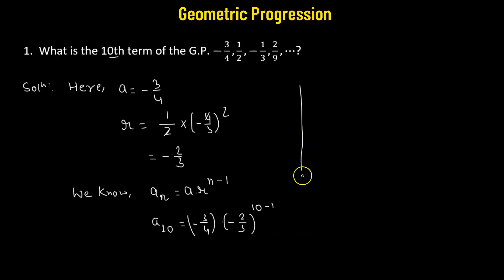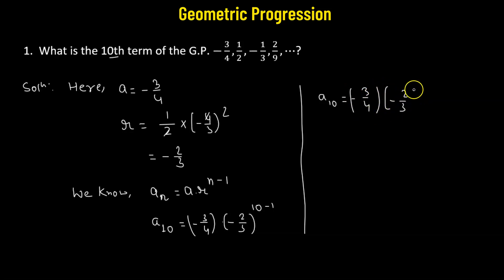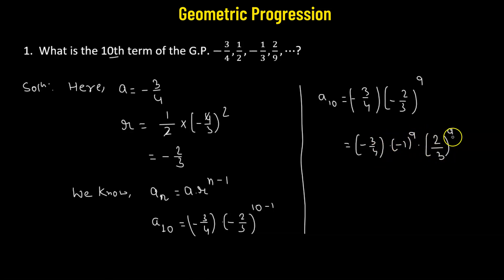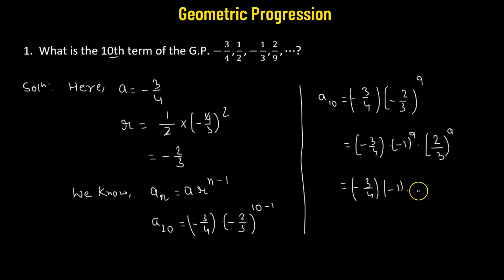So a_10 equals negative 3 over 4 multiplied by negative 2 over 3 raised to the power of 9, which equals negative 3 over 4 multiplied by negative 1 raised to the power of 9 times 2 over 3 raised to the power of 9. Since 9 is an odd number, we get 3 over 4 times 2 raised to the power of 9 divided by 3 raised to the power of 9.